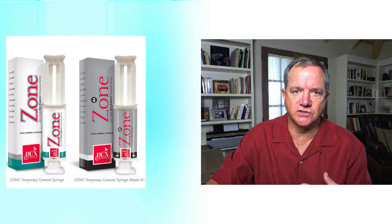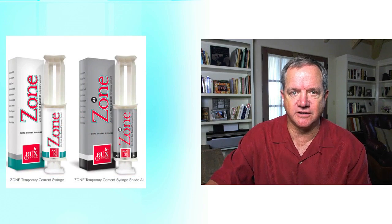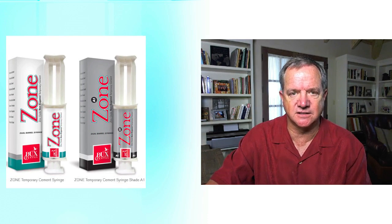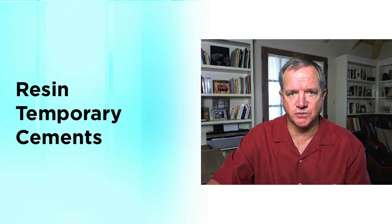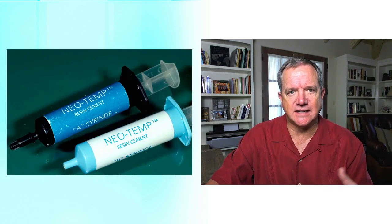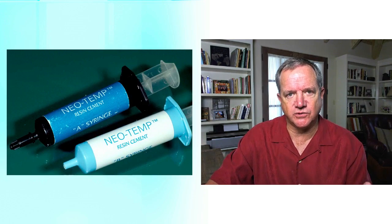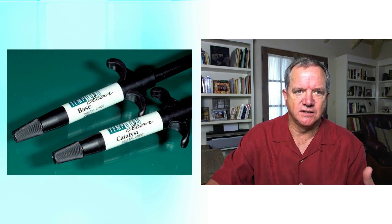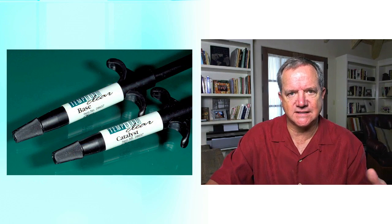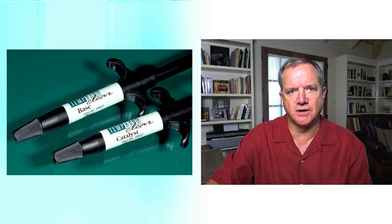On the non-eugenol side, products like Zone are very, very popular. Again, it's a simple mixing system, very retentive, but doesn't have the eugenol in it. And then we also have resin temporary cements — products like NeoTemp, which is a Waterpik product, or Temp Bond Clear, which is another concept of a resin temporary cement that's a dual-cure product.